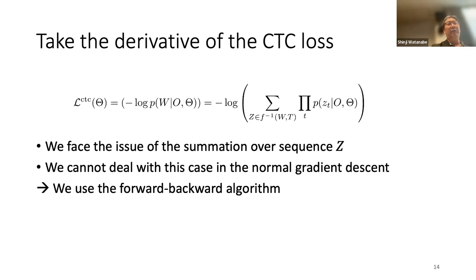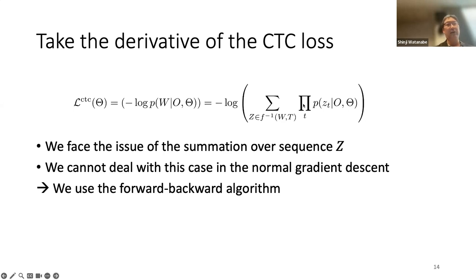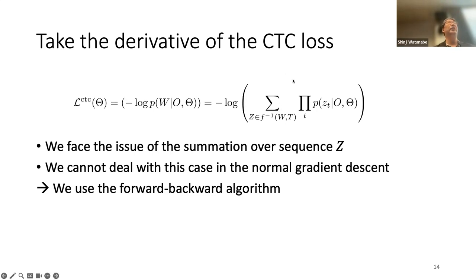Now let's try to take the derivative of the CTC loss. We start from minus log of the posterior distribution. This is still very complicated — how the model parameters appear is not clear. We can use the equation derived in the CTC factorization part, substituted in here. And if we take the derivative, we make progress. However, the issue is similar to the EM algorithm: we have a summation over the sequence, which is very expensive.